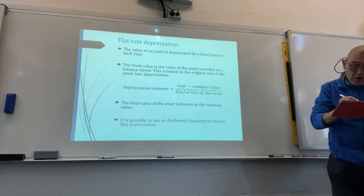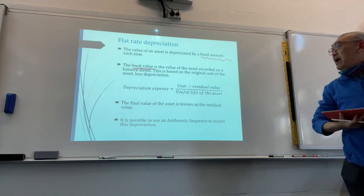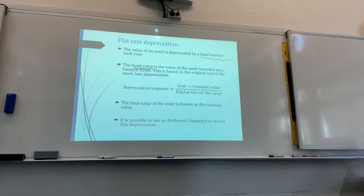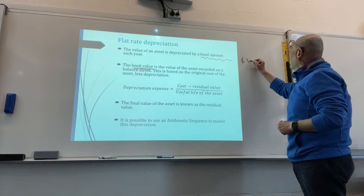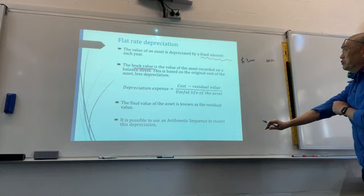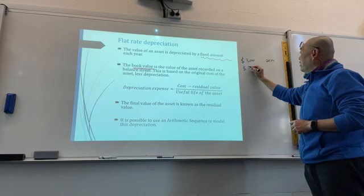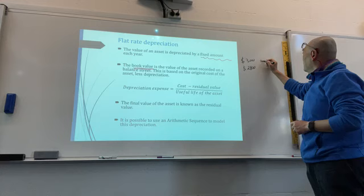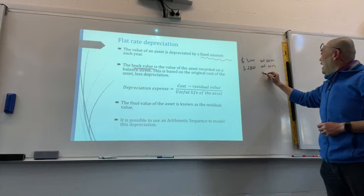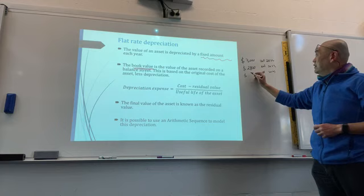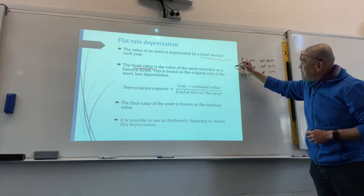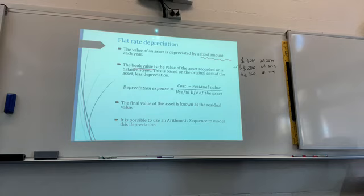You need to know the term 'book value' — the value of the asset recorded on the balance sheet, based on the original cost less depreciation. Say I buy something at $3,000 at the beginning of 2022. At the end of 2022 I depreciate it by $200, so it's $2,800. At the end of 2023 I depreciate by another $200, giving $2,600. You can see it's a fixed amount of minus $200.